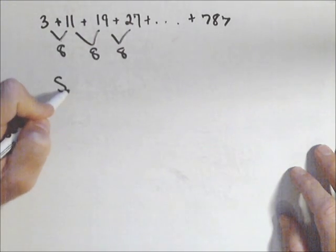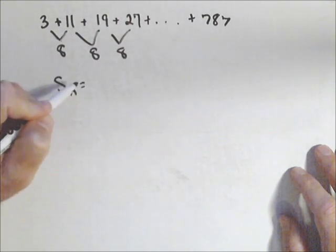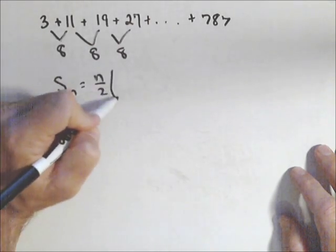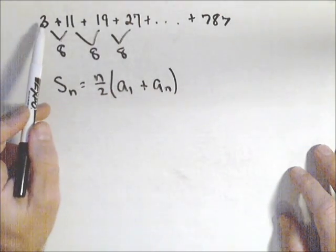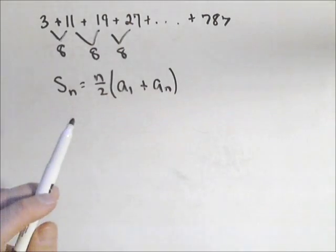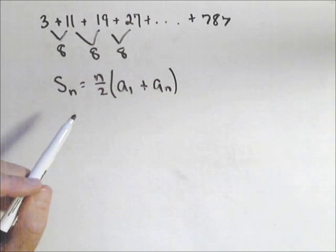Now to sum up a finite arithmetic series, it's the number of terms over two times the first term plus the last term. So if we look at what we have, we have the first term, we have the last term, so we're in good shape there. We don't have the number of terms.